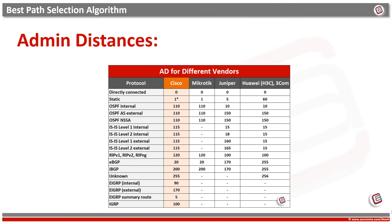These are some admin distances on different vendors. For example, Cisco has 0 admin distance for directly connected routes, and all other vendors follow the same. But for static routes, Cisco has 1, while Mikrotik, Juniper, and Huawei have different preferences. For OSPF, the admin distance is always 110 on Cisco, though some vendors differ slightly. For ISIS, it is 115 on Cisco, but 15 on Juniper and Huawei. Then there is EBGP, IBGP, and EIGRP which is Cisco proprietary, and finally 255 is used for unknown subnets.